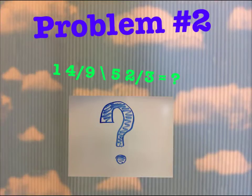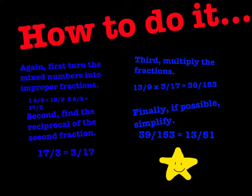Here's the next problem: 1 and 4 ninths divided by 5 and 2 thirds equals... First, turn the mixed numbers into improper fractions. 1 and 4 ninths equals 13 over 9, and 5 and 2 thirds equals 17 over 3. Next, find the reciprocal of the second fraction. 17 over 3 would equal 3 seventeenths.